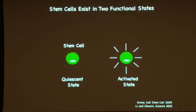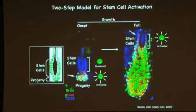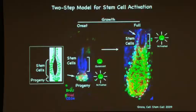My previous work has shown that stem cells can exist in two different functional states: a quiescent state and an activated state. Here again is a schematic of a hair follicle where the stem cells and the progeny coexist at the bottom of the follicle. We have shown that when regeneration starts, this is happening not at the expense of the stem cells, as everybody was postulating, but at the expense of the immediate progeny.